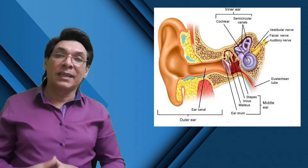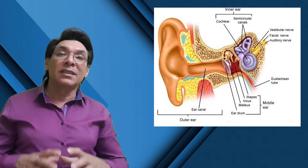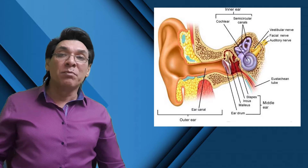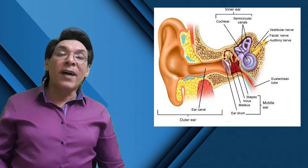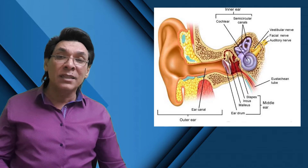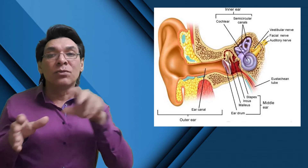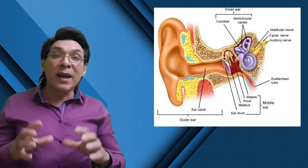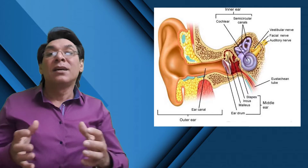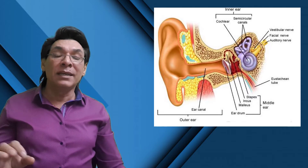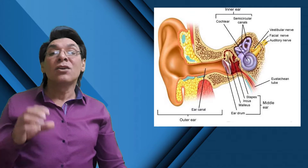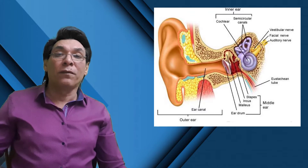The middle ear, or tympanic cavity, is an air-filled space in the temporal bone. The tympanic membrane vibrates in response to sound. Tympanic membrane vibrations are concentrated and amplified by the ossicles — malleus, incus, and stapes. Vibration of the ossicles causes movement of fluid in the inner ear.